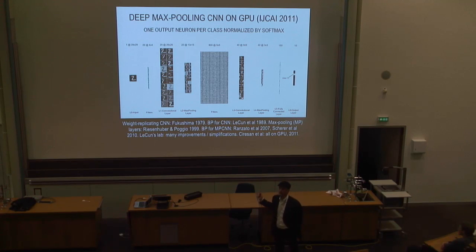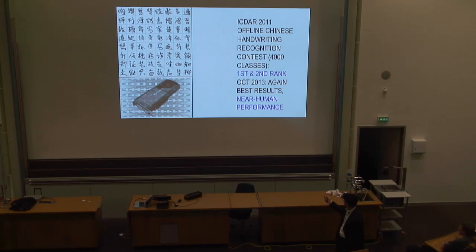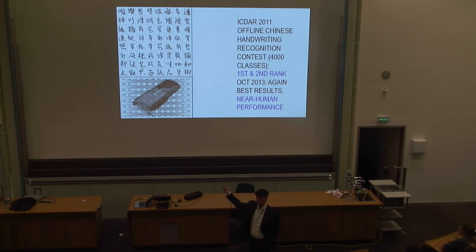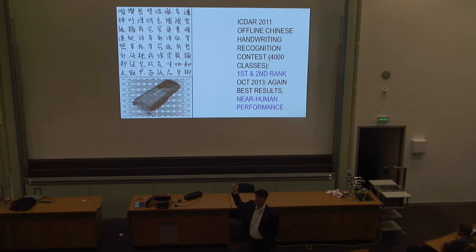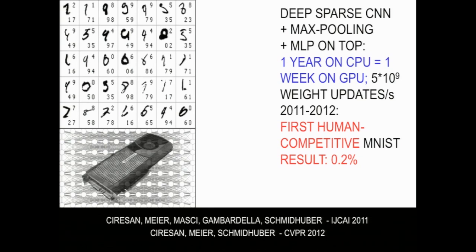We put it all on GPU, and then it was much faster and was able to outperform plain networks on things such as MNIST. In 2011, that was Chinese handwriting recognition — unlike Latin digits with only 10 classes, here you have 4,000 classes, so a network with 4,000 output units. This system easily won the competition and also got human-competitive results on MNIST of about 0.2% errors.